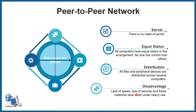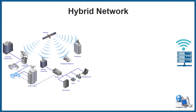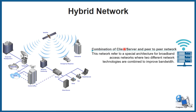This network can also slow down under heavy file loads. The last model is hybrid network, which is a combination of client-server and peer-to-peer networks. This network refers to a special architecture for broadband access networks where two different network technologies are combined to improve bandwidth. Bandwidth basically provides the speed to connect one device to another.